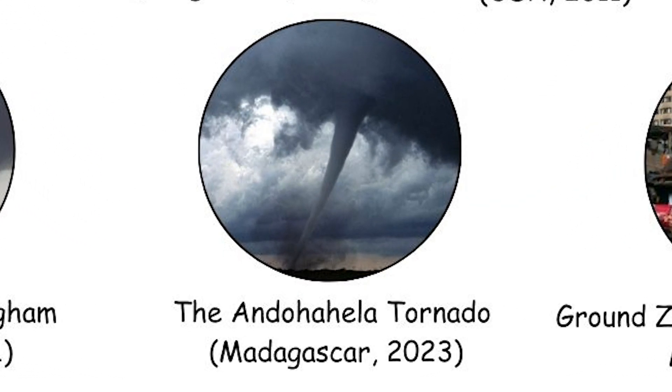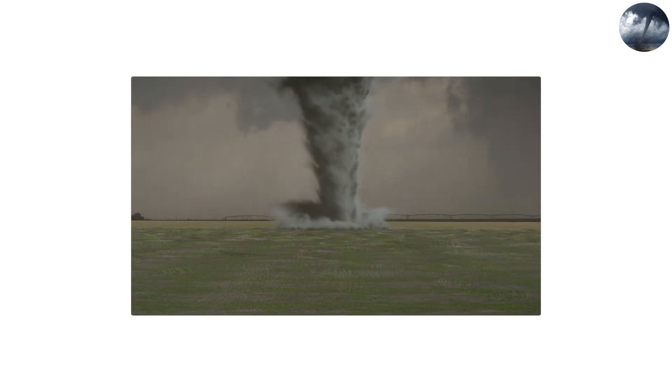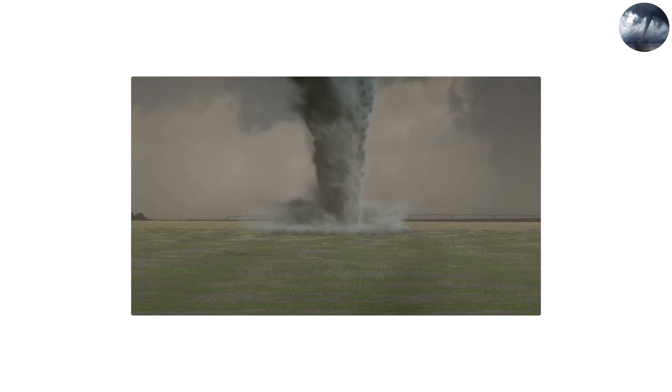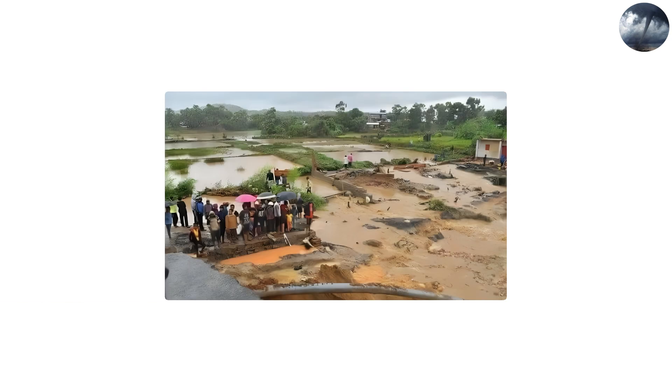The Andohahela Tornado, Madagascar, 2023. In February 2023, a rare and powerful tornado struck Andohahela, a rural region in Madagascar. Though tornadoes are uncommon in this part of the world, shifting climate patterns and unusual weather conditions triggered a destructive event that left at least 78 people dead and hundreds more injured. With an estimated rating of EF3, the tornado destroyed homes, schools, and agricultural land, leaving thousands of residents in urgent need of aid.